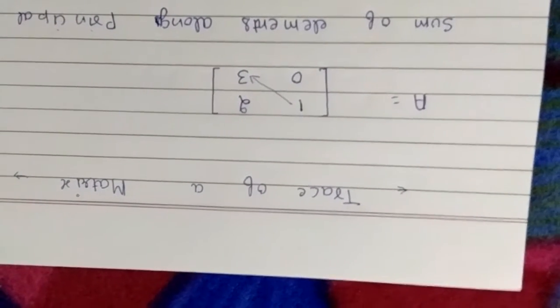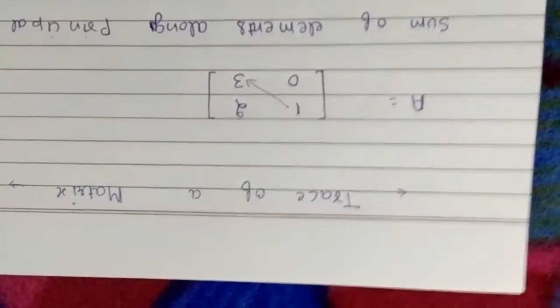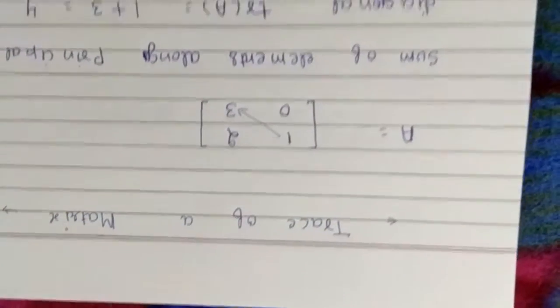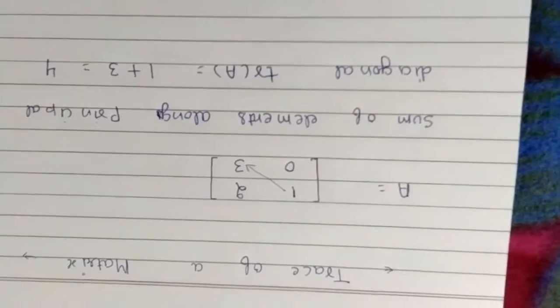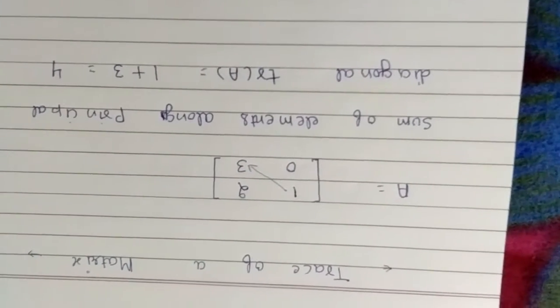Suppose A is given to you, a 2x2 matrix, and you have to find trace of A. Basically, trace of A means sum of elements along principal diagonal.